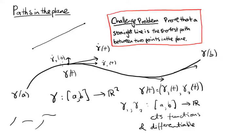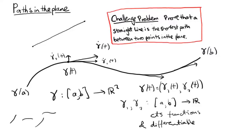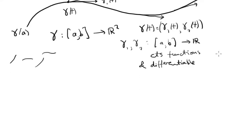So in other words, we need the component functions of gamma to be differentiable. And we want them to be continuously differentiable because we don't want the tangent vector to be jumping around. So let me write continuously differentiable. Anyway, that's what we need from our paths.